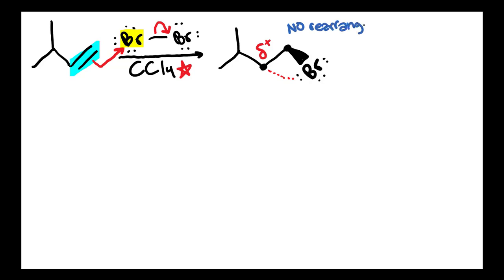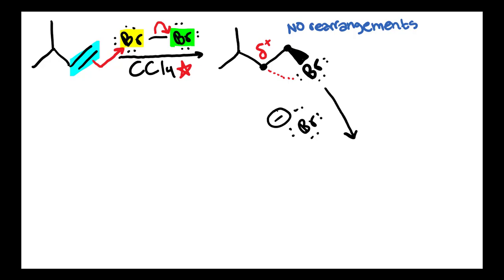There are no carbocations here, so we can't have a rearrangement. What we want to do next is consider the nucleophilic attack, since we don't have to check for any rearrangements like we did for hydrohalogenation. That second bromine that was the leaving group — he's going to come back. He left and now he's coming back, floating around, and he is going to act as our nucleophile. He's got eight electrons around him and a full negative charge, and he will attack the partial positive. But the question has to do with stereochemistry: is he going to attack from the top face or from the bottom face?